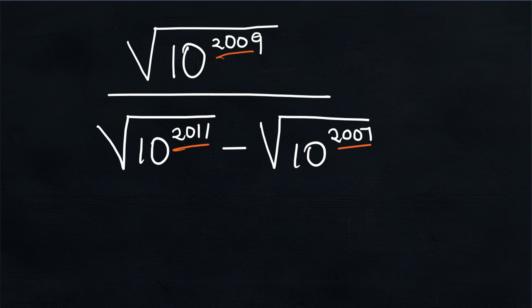In order to simplify this expression, we are going to take just one of these exponents — either 2009, 2011, or 2007 — and equate that number to x. It doesn't matter which number you choose; when you simplify further you will still get to the same answer. In this case I prefer to choose the smallest number.